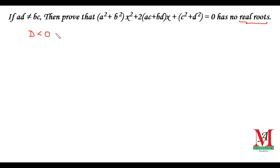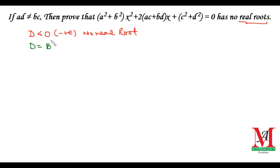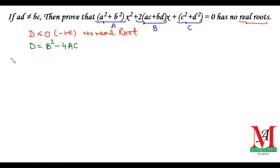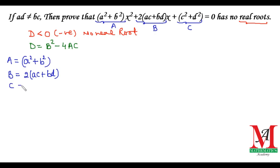It means we have to find the discriminant D first, and we know that D equals b squared minus 4ac. Now let us see the values of a, b, and c from the quadratic equation. This is the value of a, which is a squared plus b squared; the value of b, which is 2(ac + bd); and the value of c, which is c squared plus d squared.